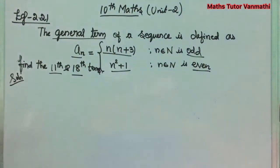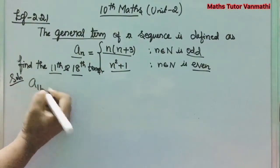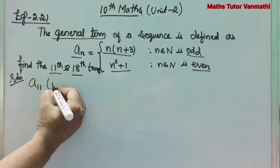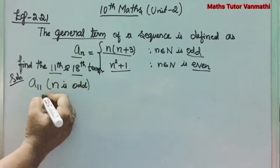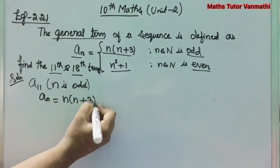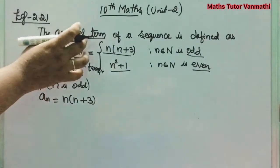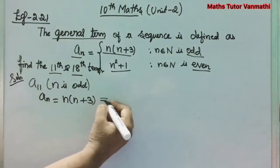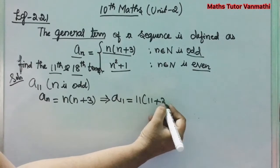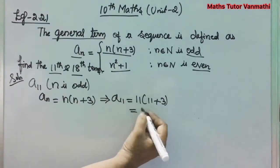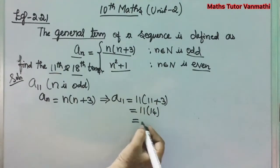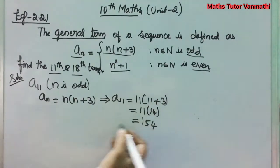First we find the 11th term, a_11. Since n = 11 is odd, we use a_n = n(n+3). Substituting n = 11, we get a_11 = 11 × (11 + 3) = 11 × 14 = 154.